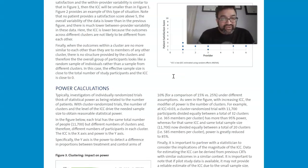So when the outcomes within a cluster are no more similar to each other than they are to members of any other cluster, there's no structure provided by the clusters, and therefore the overall group of participants looks like a random sample of individuals rather than a sample from different clusters.